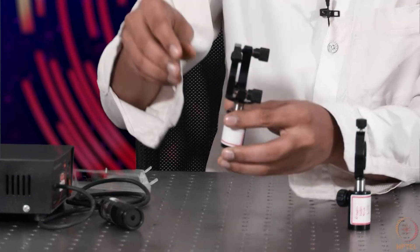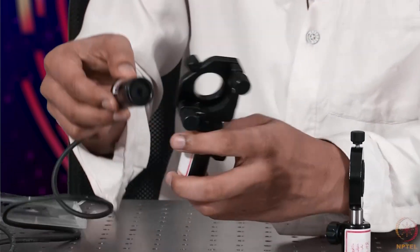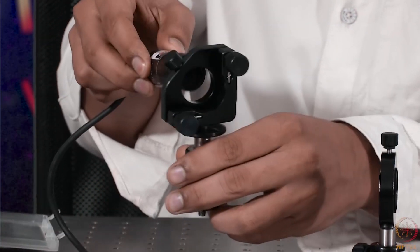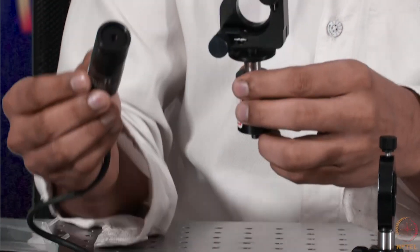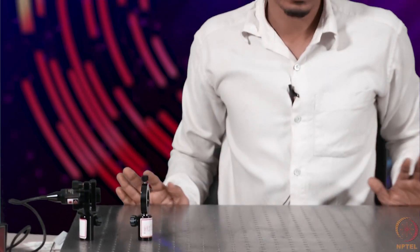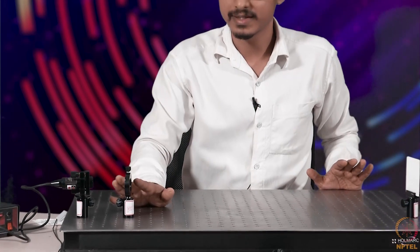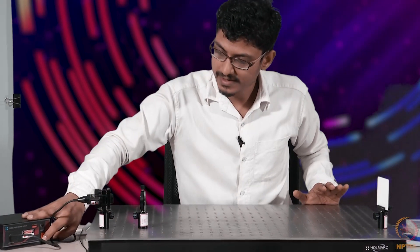And then this is a laser mount to mount this laser. It is on the holder. You just put the kinematic mount. This is kinematic laser mount. Now this is the complete optical setup. Now we can switch on the laser light.